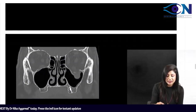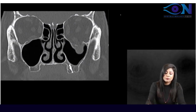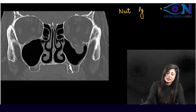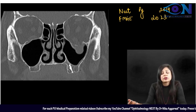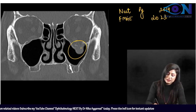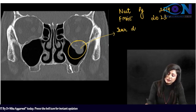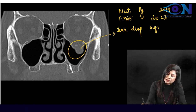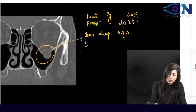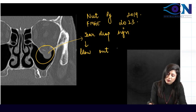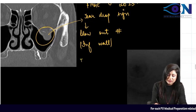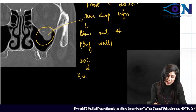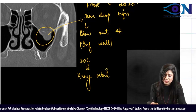Another very important picture — this is the tear drop sign seen in blowout fracture, most commonly of the inferior wall. The investigation of choice is X-ray orbit where you get this typical tear drop sign. This appeared in NEET PG 2019 and also recently in FMG examinations 2022–2023.